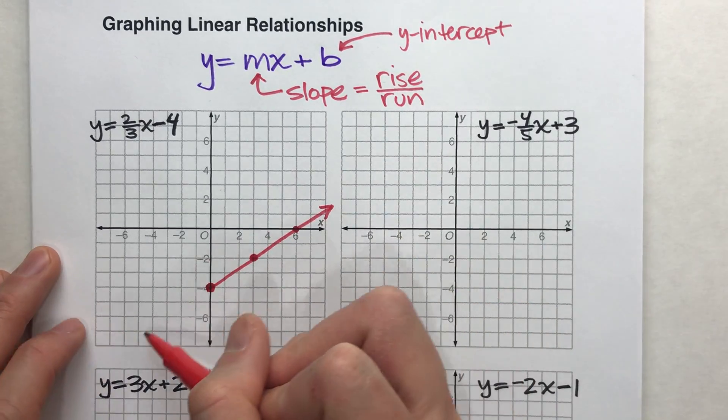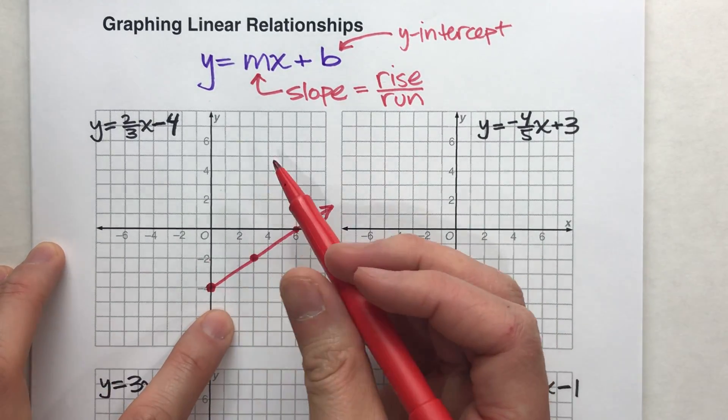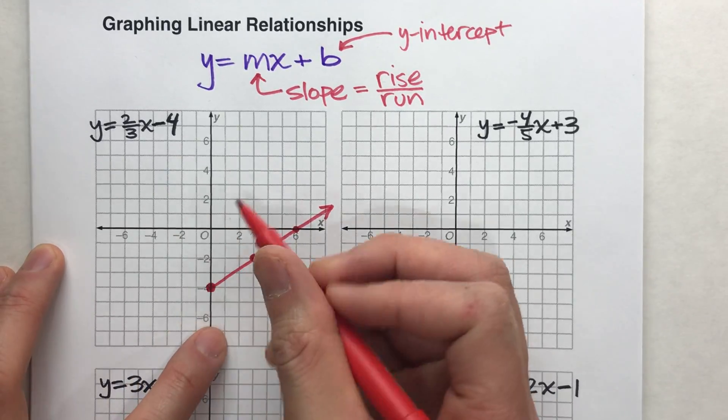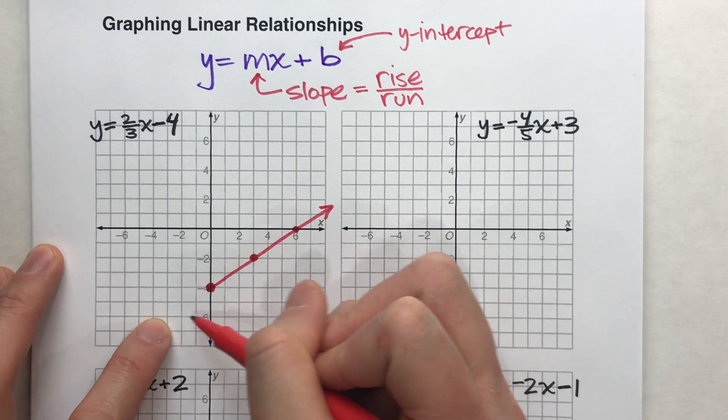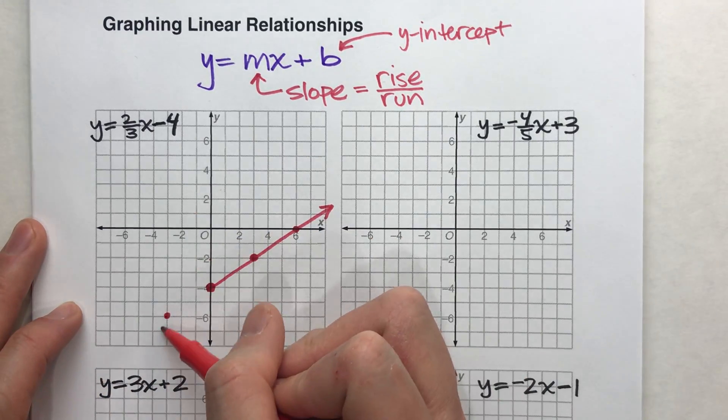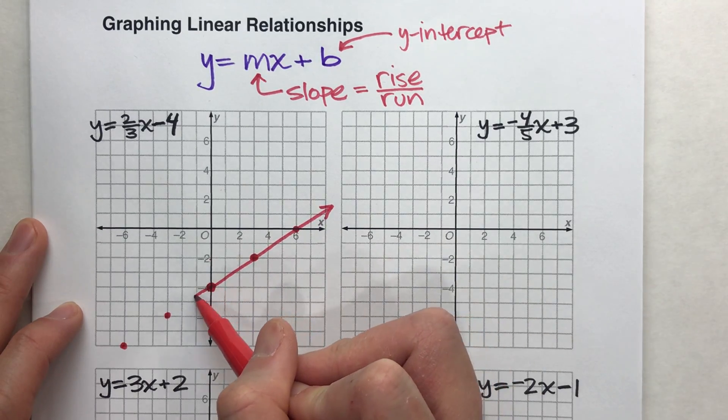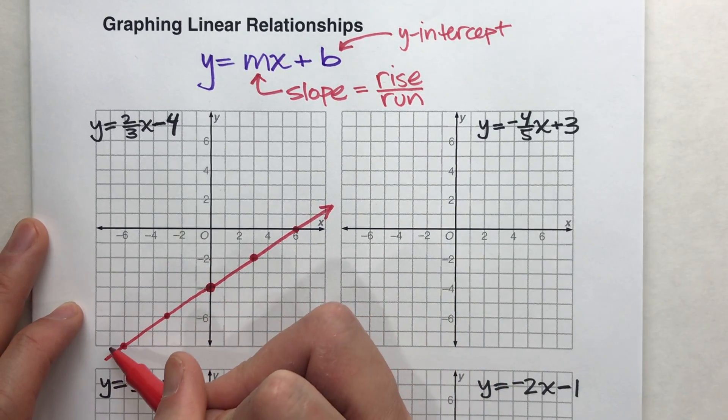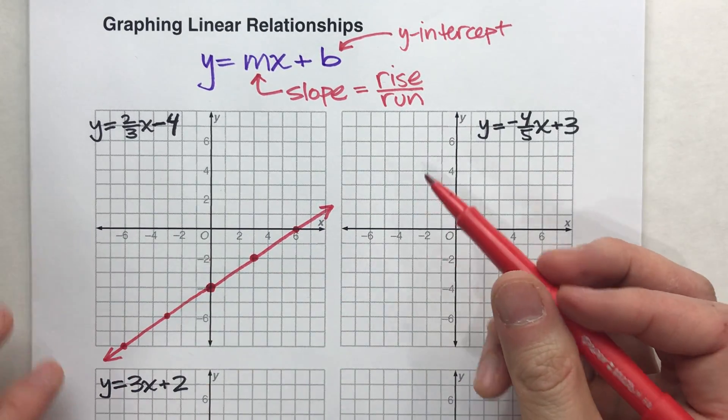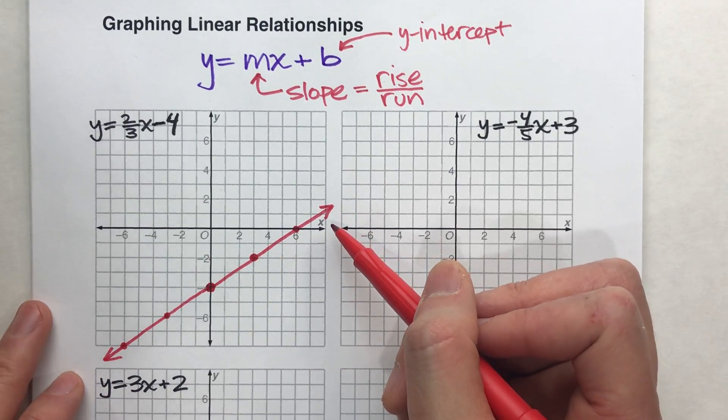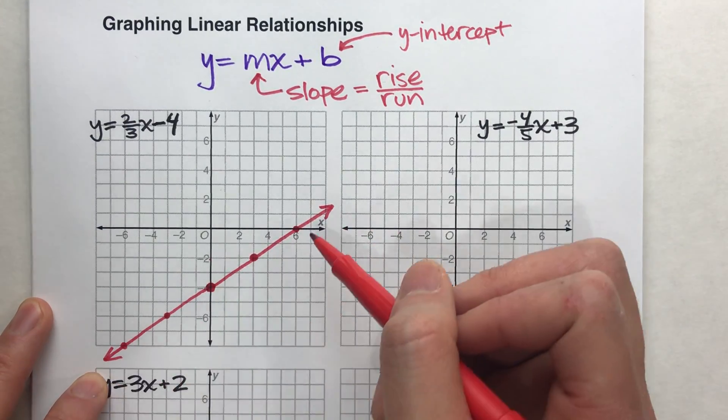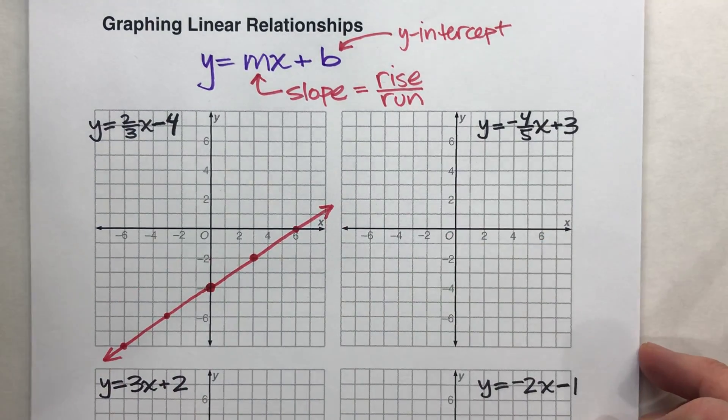Now, I should continue the line the other way. And to do that, we just repeat the pattern backwards. So I just go down two and backwards three. Down two and backwards three. And you can kind of see the pattern based on looking at the front end of this line. But there is my line. And I do put arrows on the end because the line goes on forever in both directions. And that's what those arrows represent.